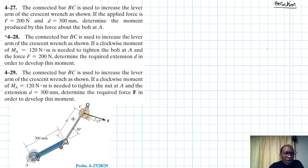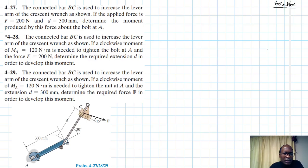We have a wrench with an extension arm. In problem 4-27 we are asked to determine the moment about point A. In 4-28 we are asked to find d while the other factors are given. In 4-29 we are asked to determine F while the rest of the factors are given.